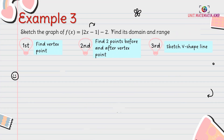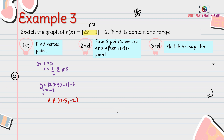Third example: sketch the graph of f(x) equals modulus 2x minus 1, minus 2. Find its domain and range. First step, find the vertex point. Take 2x minus 1 and equate with 0; x equals 1/2 or 0.5. Substitute to find Y: Y equals negative 2. Now we want to find two points before and after the vertex point — we can also find more, including the x and y intercepts.